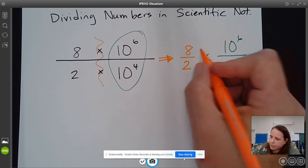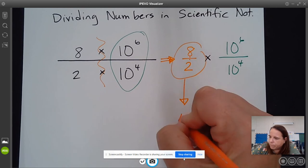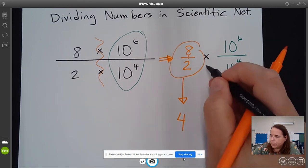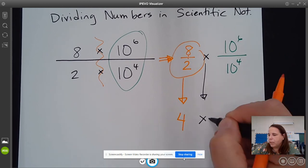So 8 divided by 2 is just 4. We're going to keep this multiplication sign because we want to keep it in scientific notation.